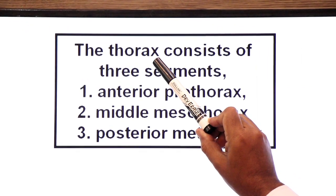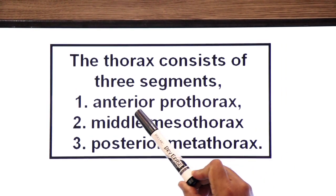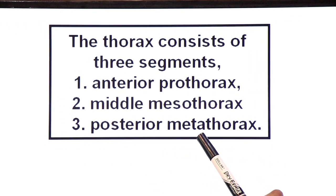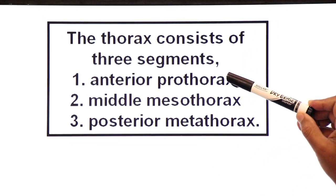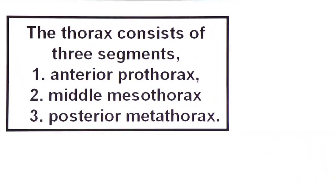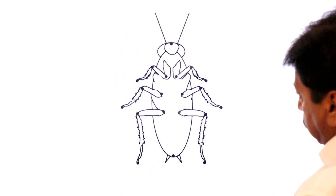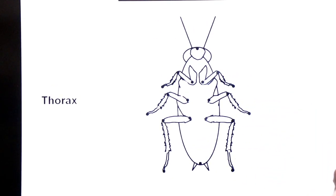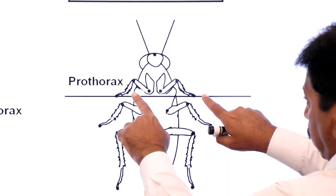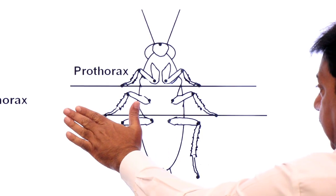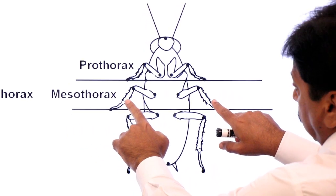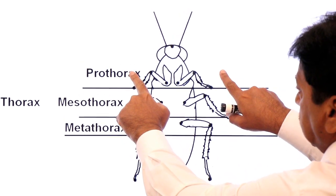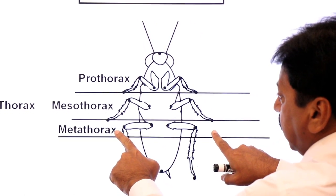The thorax of cockroach is further divided into three segments. The thorax consists of three segments: first, the anterior prothorax; number two, the middle mesothorax; and number three, the posterior metathorax. Two legs are present in prothorax, two legs are present in mesothorax, and the last two legs are present in metathorax.